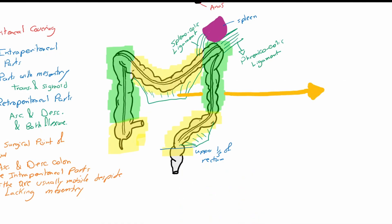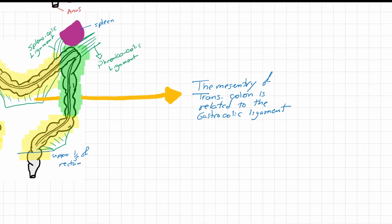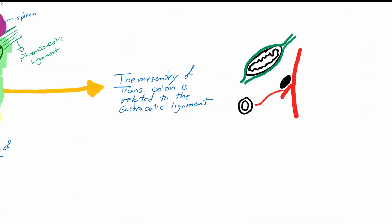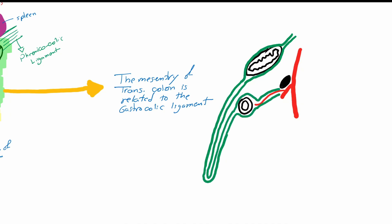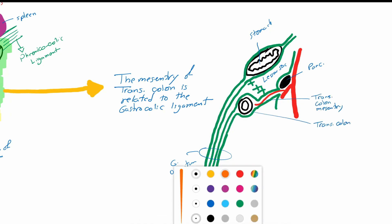The stomach and the colon are connected through the gastrocolic ligament or the greater omentum. Sometimes there are adhesions between the greater omentum and the transverse mesocolon, so one must take care when entering the lesser sac not to injure the transverse mesocolon.